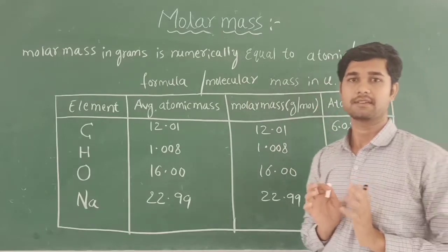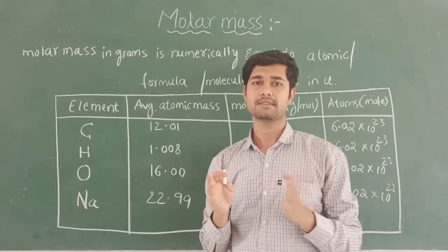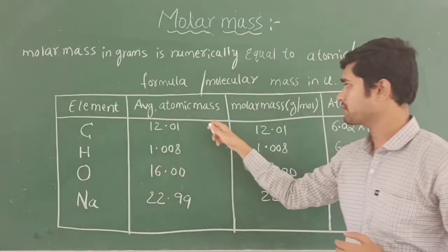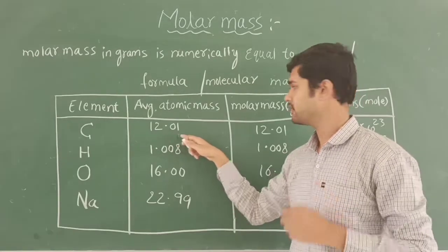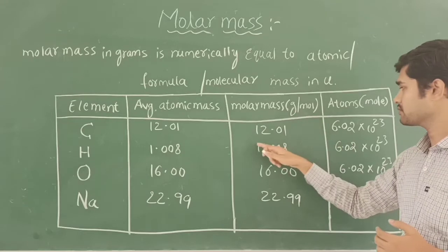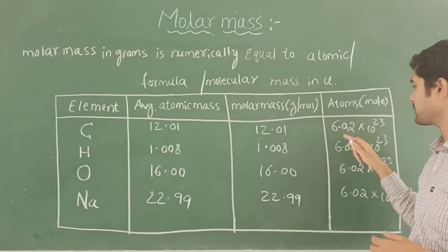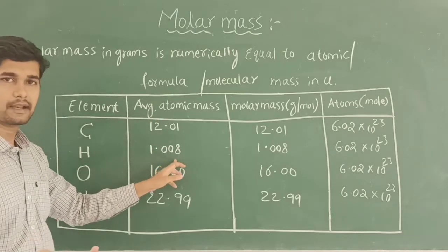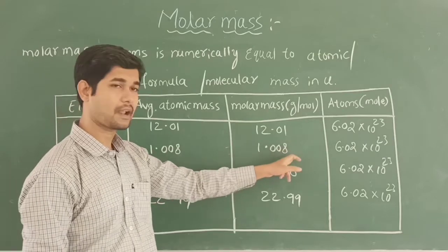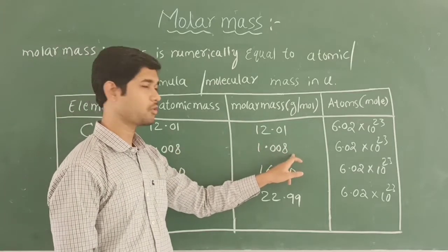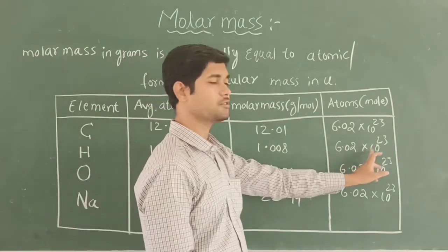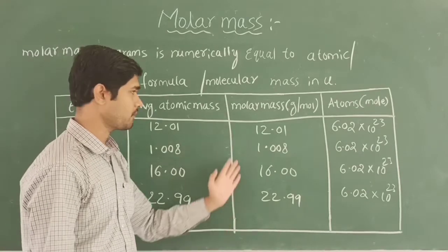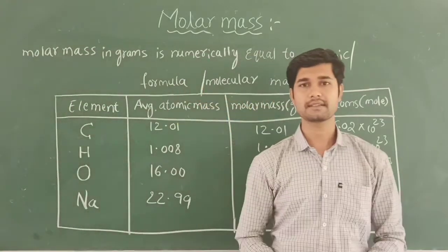Not only carbon, but other elements also show the same numerical value for atomic mass and molar mass. For carbon, the average atomic mass is 12.01 and molar mass is 12.01 gram per mole, with 6.023 × 10²³ atoms per mole. For hydrogen, the average atomic mass is 1.008 and molar mass is also 1.008 gram per mole, with the same 6.023 × 10²³ atoms per mole. Oxygen and sodium follow the same pattern.